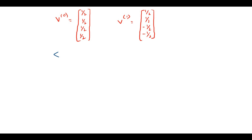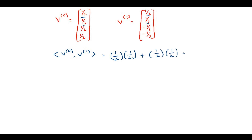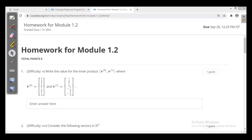The inner product between V0 and V1 is the sum of products of these two. The first element of the first vector and the first element of the second vector are multiplied. Similarly, the second, third, and fourth elements are multiplied pairwise. The inner product of V0 and V1 is simply zero.